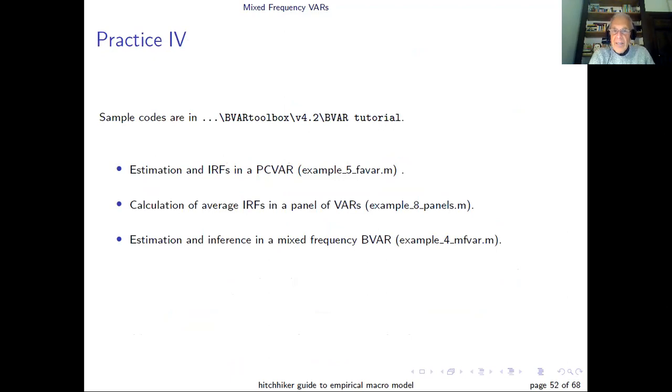So in terms of practice, again in the BVAR tutorial, you have three sets of programs. One which basically runs a FAVAR model, one which shows you how you can compute panel estimates of impulse responses when you have a panel of data, and then there's an example which uses mixed frequency BVAR with monthly and quarterly data. Here it's computing the monthly version of GDP.